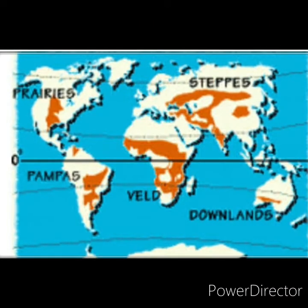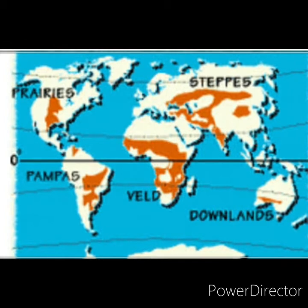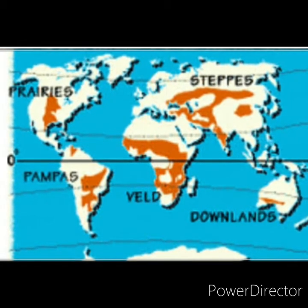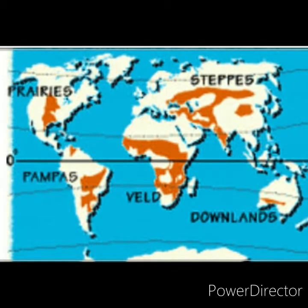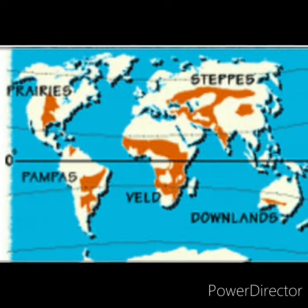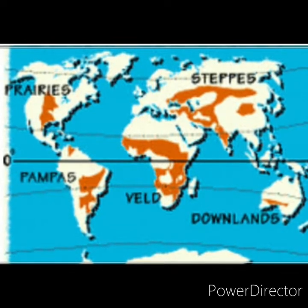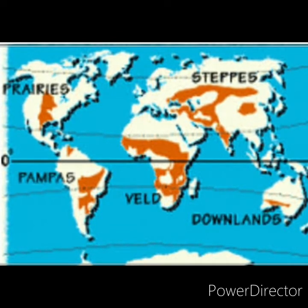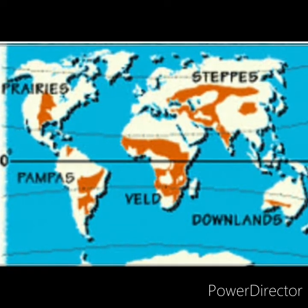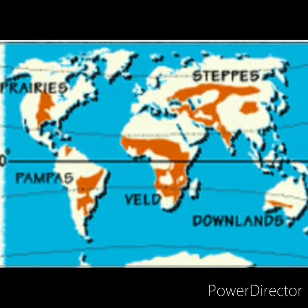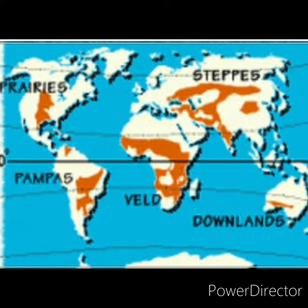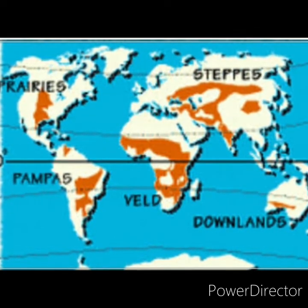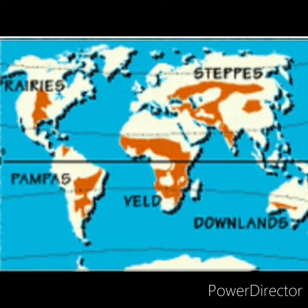Temperate grasslands are called differently in different parts of the world: Prairie in North America, Steppes in Eurasia, Pampas in Argentina and Uruguay, Veld in South Africa, Downs in Australia, Canterbury in New Zealand, and Manchurian in China.